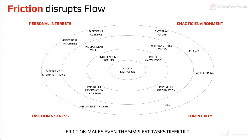Remember that friction disrupts flow. I love this diagram because it clearly shows circles each pointing in a different direction — personal interests, emotion and stress, complexity, and a chaotic environment — and the center of all of it is human limitation. There are limits to what a human being can do with limited knowledge, independent agents, unpredictable events, imperfect information, external actors, different agendas, different interpretations, different priorities, and noise. And in the midst of all of this, you are expected to run flow.